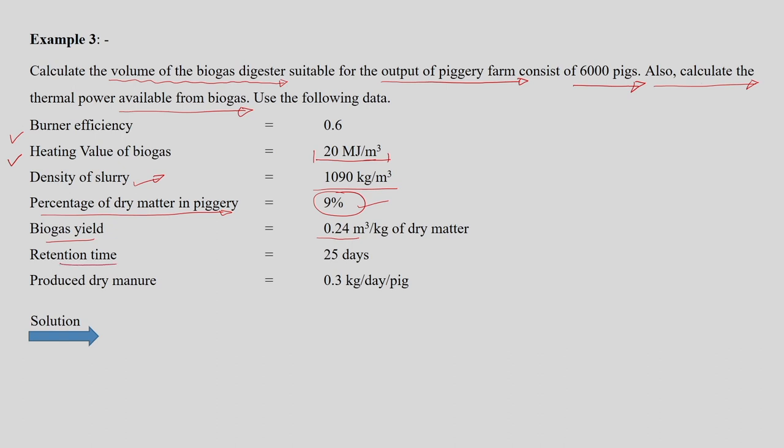The retention time given is 25 days and the dry manure produced is 0.3 kg per day per head. With this given data we need to estimate the volume of the digester, and based on the gas produced we need to calculate the thermal power. Let us solve this example in a stepwise manner.